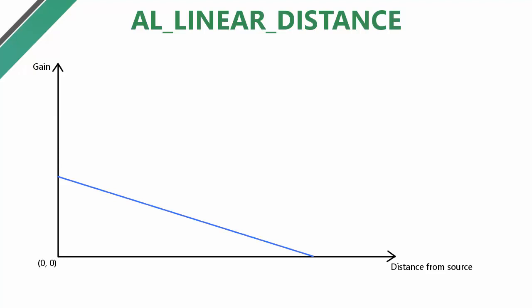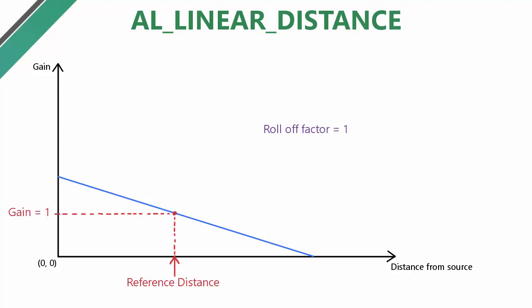The linear distance model is slightly different from the other two, in that the gain decreases linearly with distance. This isn't really a very realistic model of how sound actually works, but it does mean that there's a definite distance at which the gain reaches 0, which is not the case in the other two models. With this model it can be quite useful to just keep the roll-off factor at 1, and then the reference distance is the distance from the source where the gain is 1, the max distance is the distance from the source where the gain is 0, and everything else can be found by linearly interpolating between these two points.